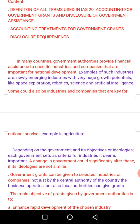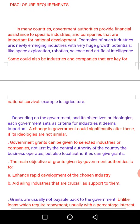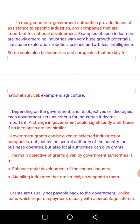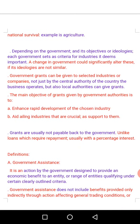Government grants can be given to selected industries or companies not just by the central authority of the country — local authorities can also give grants. In many countries we have sub-nationals such as states, provinces, municipal areas, and local governments; all of these can give government grants, not just central authorities. The main objectives of grants given by government authorities are: (a) to enhance rapid development of the chosen industry, and (b) to aid allied industries that are crucial as support.